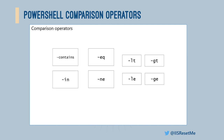On top of that, we have containment operators for when you have collection types — arrays, enumerable types. If you want to figure out whether a collection contains at least one instance of something, -contains or -in is the way to go. These also have negated counterparts: -notin and -notcontains. We also have string testing operators: -like for wildcard pattern matching and -match for regex pattern matching. Finally, we have type operators: -is to test whether an object is of a certain type, and its negated counterpart -isnot.